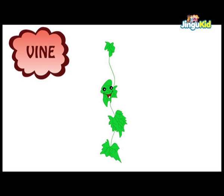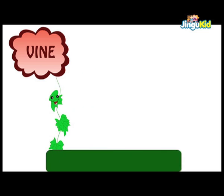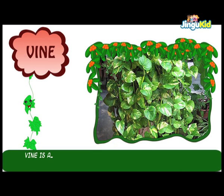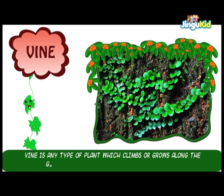Vine. A vine is any type of plant which climbs or grows along the ground and which has woody twisting stems.